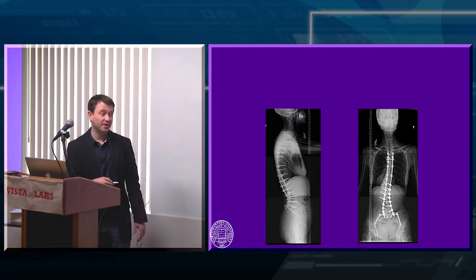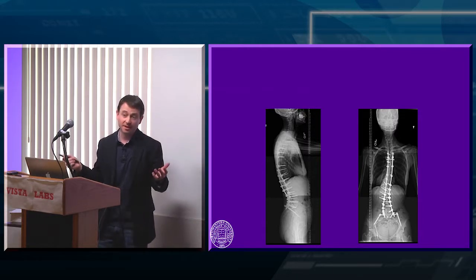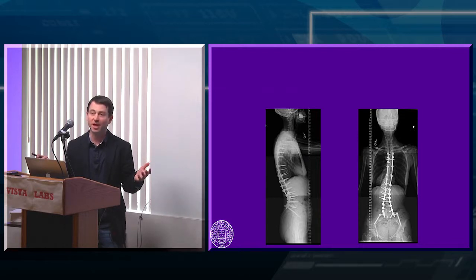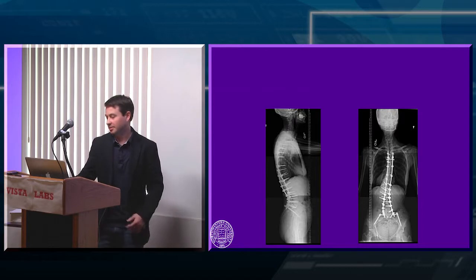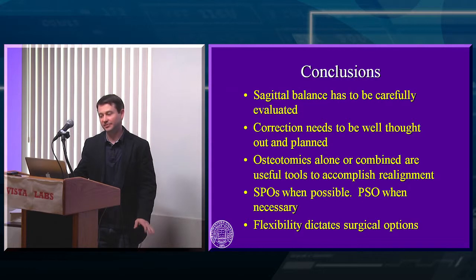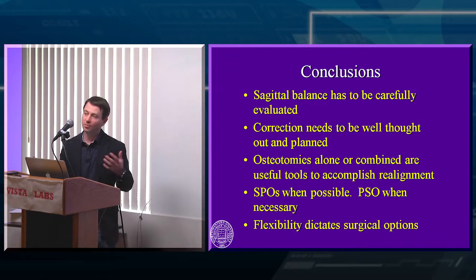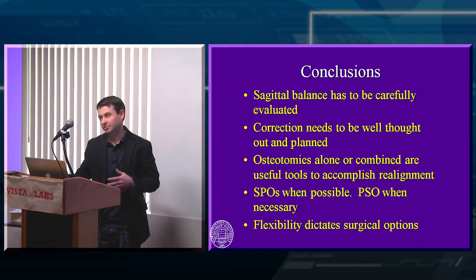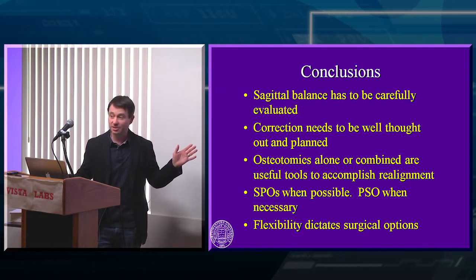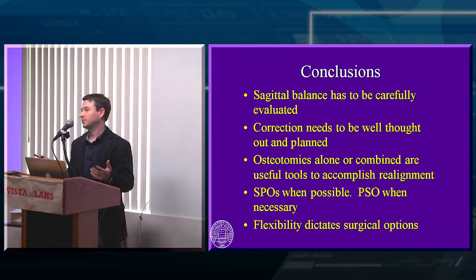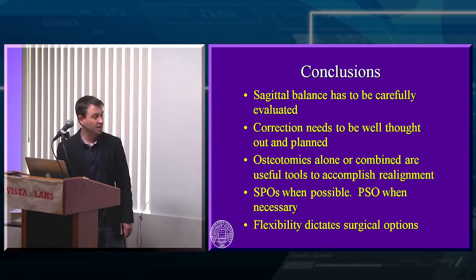In conclusion, you always have to look at balance, plan your corrections, and go in with a clear plan: how flexible is this spine, what levels am I using, what forces will I apply, what implants do I need? Osteotomies are the real workhorse of adult deformity — SPOs when possible, PSO when necessary. Almost all the cases shown used Smith-Petersen or Ponte-style osteotomies. Flexibility is truly the key: if you evaluate it properly preoperatively, you can figure out exactly what surgical treatment is needed. Thank you.